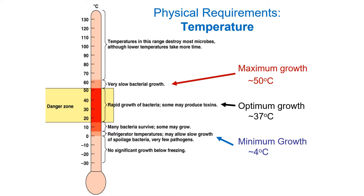This is why your refrigerator has a temperature of approximately 4 degrees Celsius. If we freeze the environment, no growth is going to occur — metabolism shuts right down, chemical reactions slow, and water is no longer available to cells because it is now frozen.